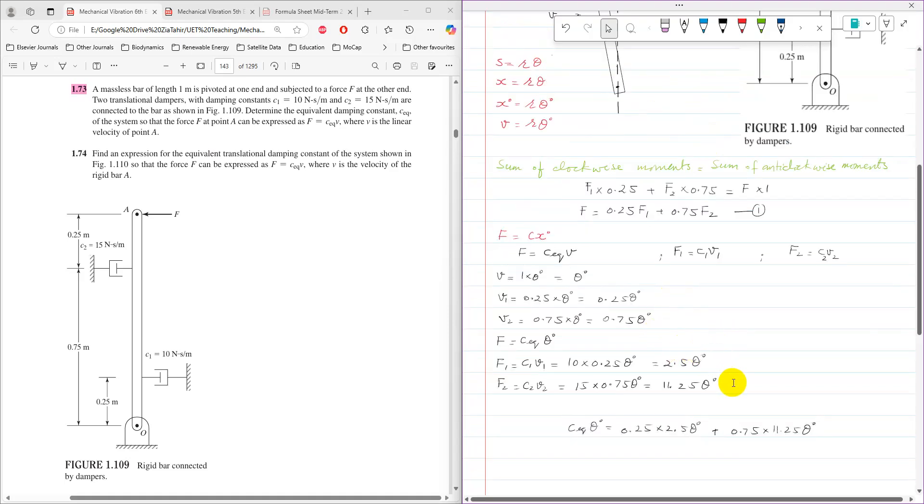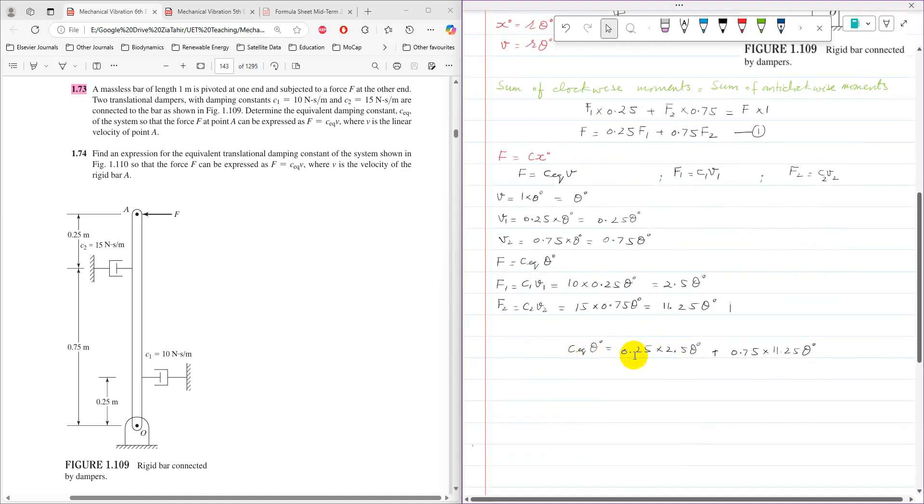After substituting F1, F2, and F into equation 1, I get C_equivalent theta dot equals 0.25 times 2.5 theta dot plus 0.75 times 11.25 theta dot. Theta dot is the same in all terms, so it can be taken as a common factor and divided out.